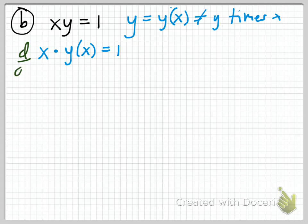The next step is to differentiate both sides with respect to x. We're going to d/dx both sides. On the left side, we have the derivative of a product of two functions — x and y of x — so we need to use the product rule. That gives us: derivative of the first (which is 1) times the second y of x, plus the first times the d/dx of the second.